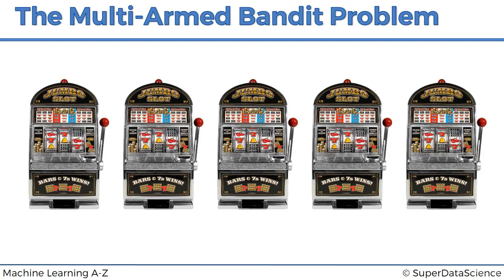A quick refresher on the multi-armed bandit problem: we have several slot machines, each one with a distribution behind it, d1 to d5. We don't know what these distributions are, and we need to start playing these machines while figuring out which one has the best distribution to exploit. We need to maximize our return during the process, finding the ideal balance between exploration and exploitation.